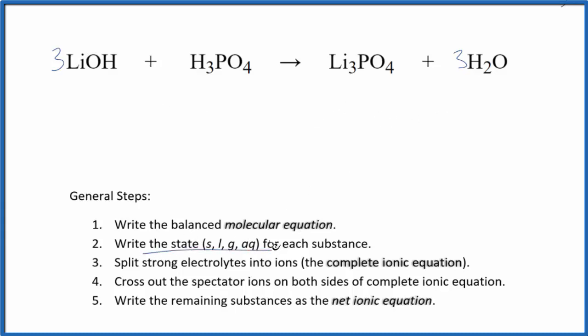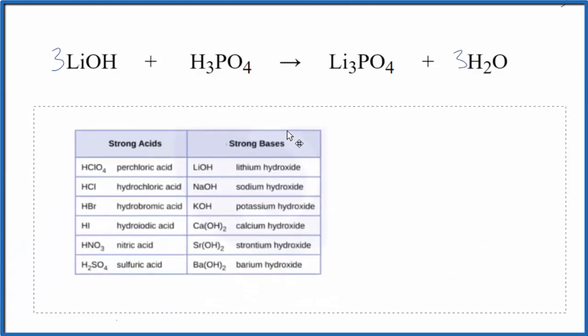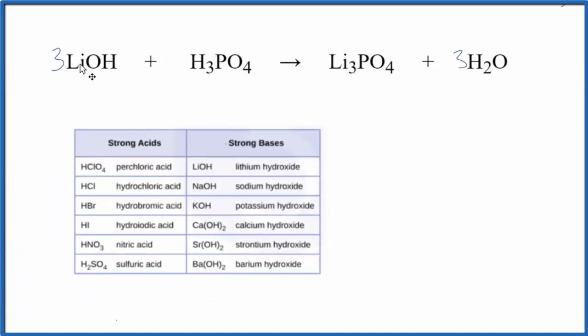Next we need to write the states for each substance. So lithium, you see that OH after it, this hydroxide bonded to the metal. If we look at a list of strong bases, this OH bonded to the metal tells us it's a base. Lithium hydroxide is a strong base, so it's going to dissociate completely in water, break apart, put an AQ after it.